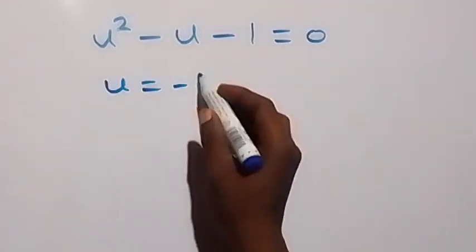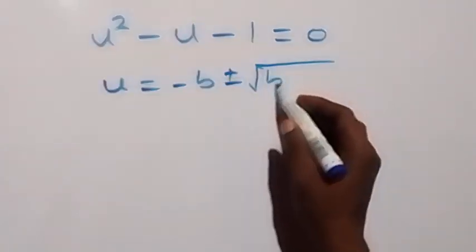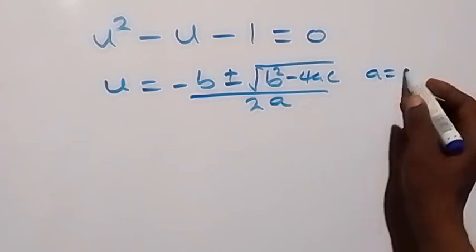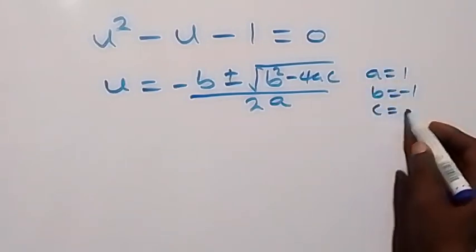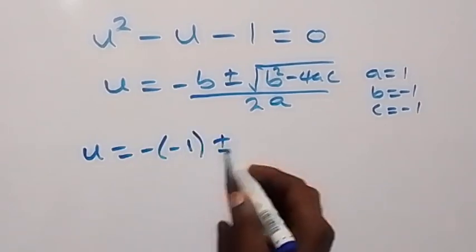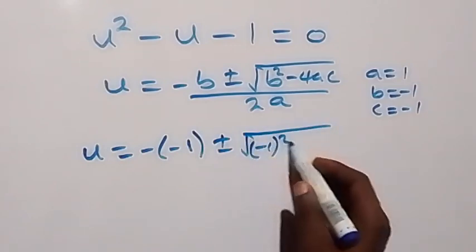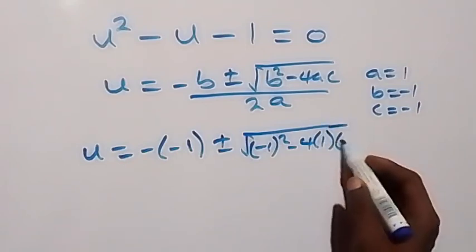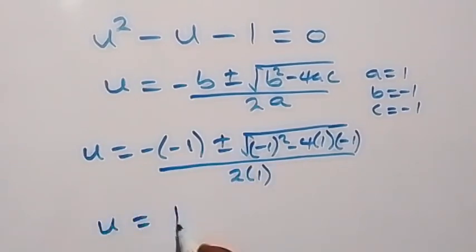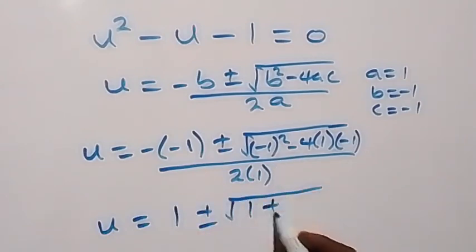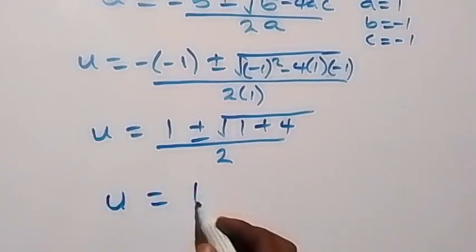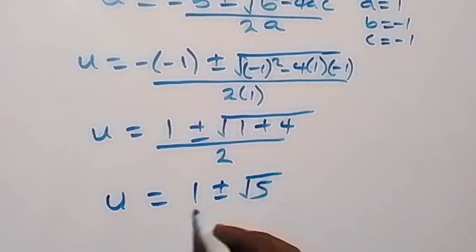Solving this quadratic equation using the quadratic formula — u equals minus b plus or minus square root of b squared minus 4ac, all over 2a — where a equals 1, b equals negative 1, and c equals negative 1. Substituting gives u equals 1 plus or minus square root of 1 plus 4, all over 2, which simplifies to u equals (1 plus or minus root 5) over 2.